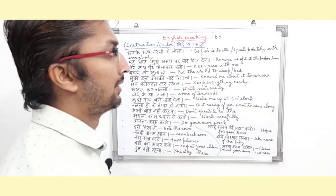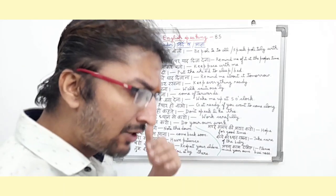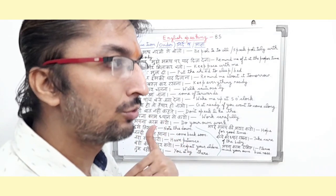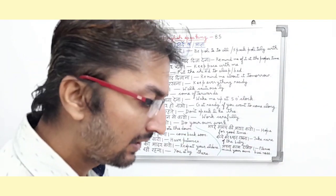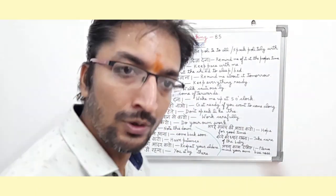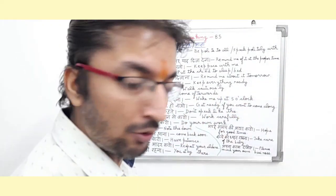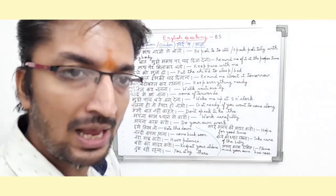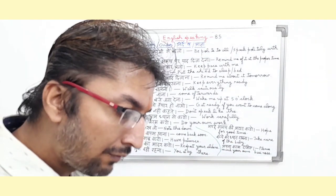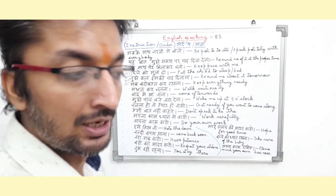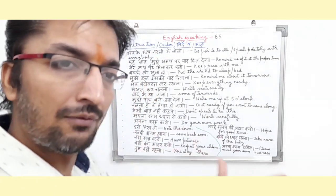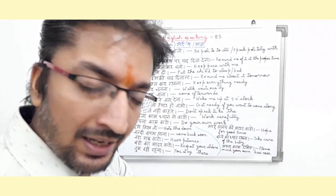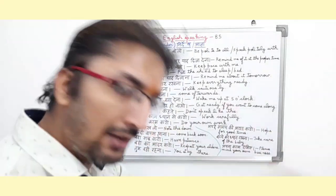Instruction or order means Nirdesh or Agya. As I had already told you in the previous lecture, instruction and order basically means that we give a command or order to another person to do our work. When we bring any item to our home, we usually get a user manual or instruction manual. So before operating or starting the apparatus, we first read the instruction manual, then we start our item or machine. I will read the sentences in Hindi and side by side translate them into English, so it will be easier for you to understand.